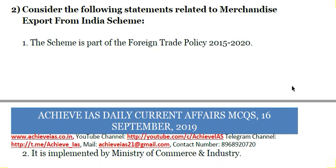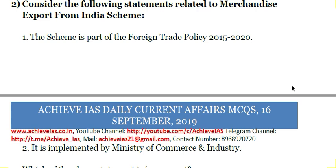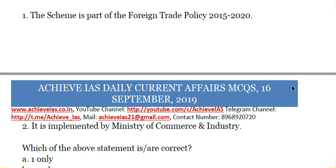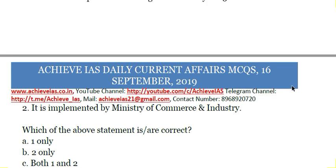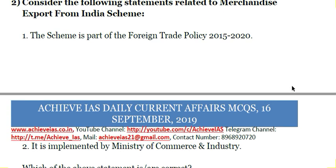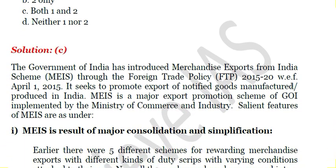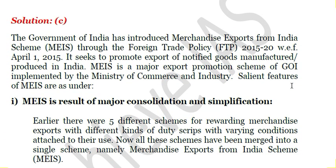Second question: Consider the following statements related to the Merchandise Exports from India Scheme (MEIS). First, the scheme is part of Foreign Trade Policy 2015-20. Second, it is implemented by the Ministry of Commerce and Industry. Both of these statements are correct, so the answer is C - both one and two. The Government of India introduced this scheme through the Foreign Trade Policy 2015-20 with effect from April 1, 2015.